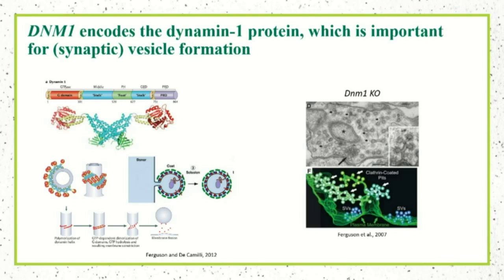To form these vesicles, you start with a budding structure pulled in from an existing plasma membrane, still attached with a small neck. The job of Dynamin is to form multimeric structures around this neck, and then it uses GTPase activity to actually pinch off the neck and form a mature vesicle.